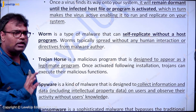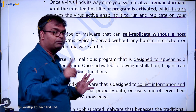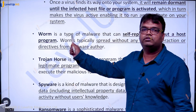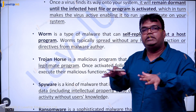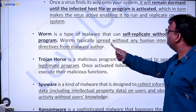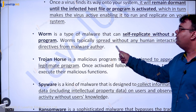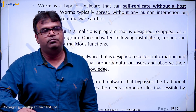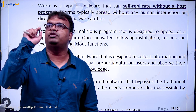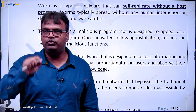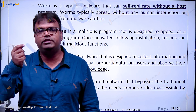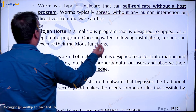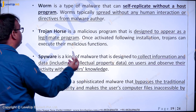A worm is also malware but it can self-replicate without a host program. In the case of a virus, it attaches itself to an executable program, but that is not the case with a worm. A worm will self-replicate — if it's in your network, it will itself grow and go into other computers. Worms typically spread without any human interaction or directive from the malware author. Then, what is a Trojan horse? A Trojan horse would appear like a good program. When you go to some website and download software, it appears to be a good quality program but it is actually malicious software. It is a malicious program designed to appear as a legitimate program. Once activated following installation, Trojans can execute their malicious functions.